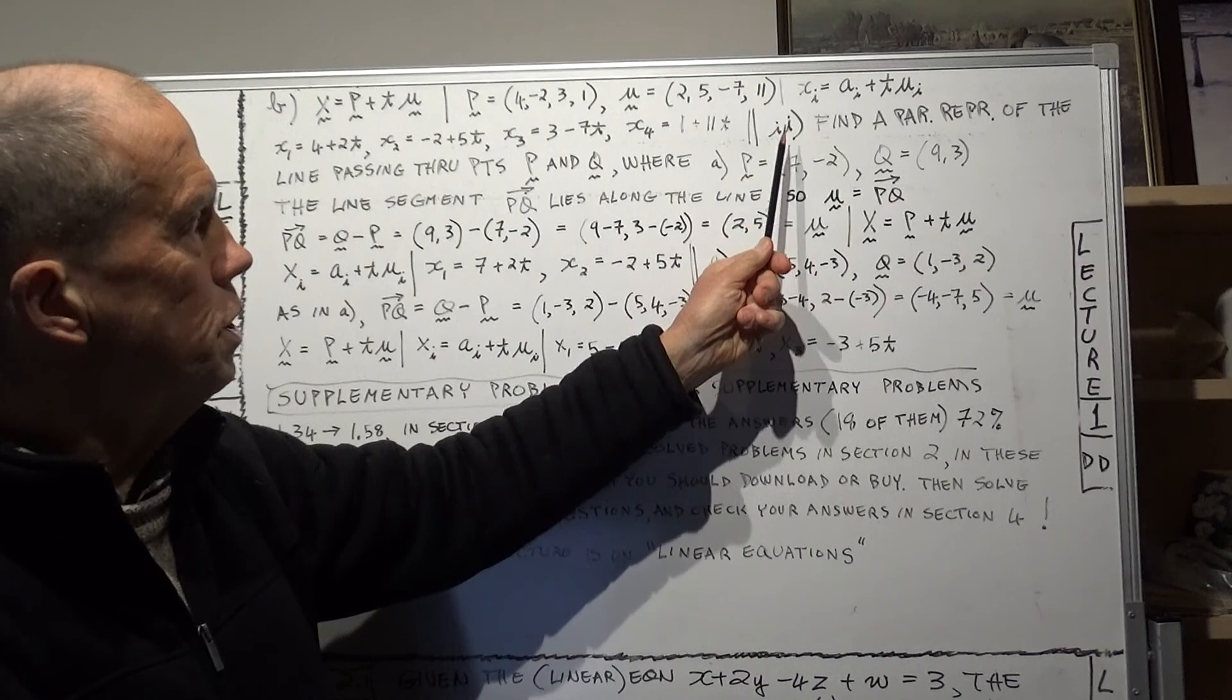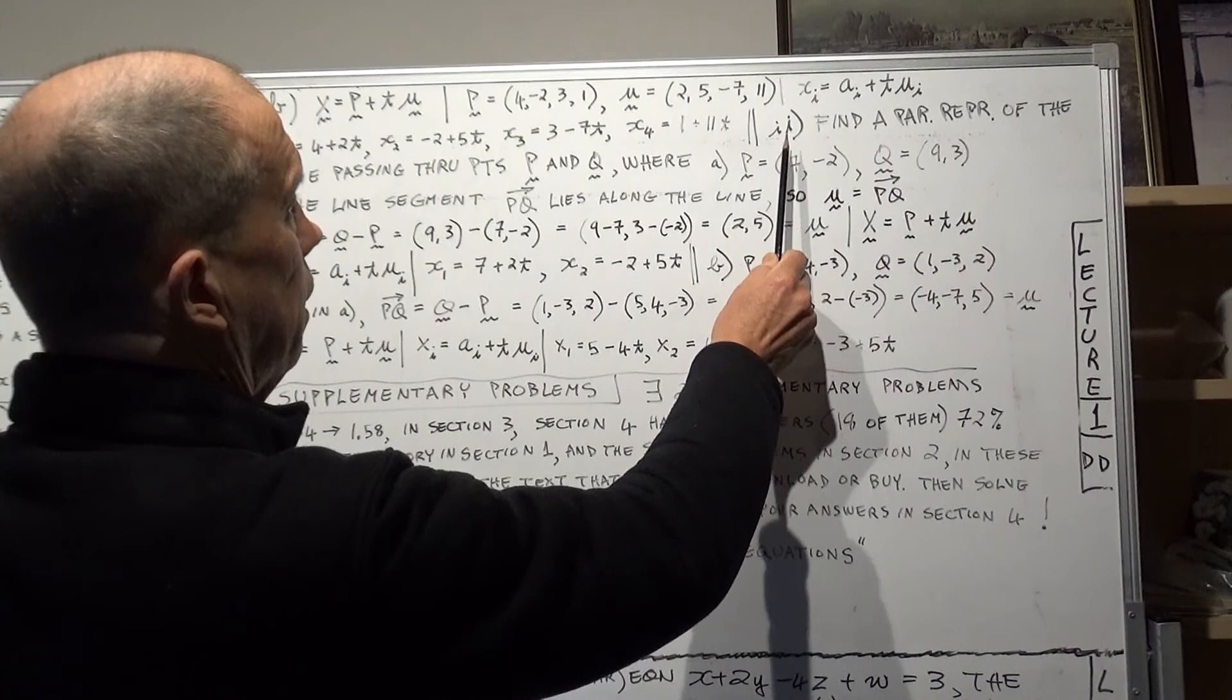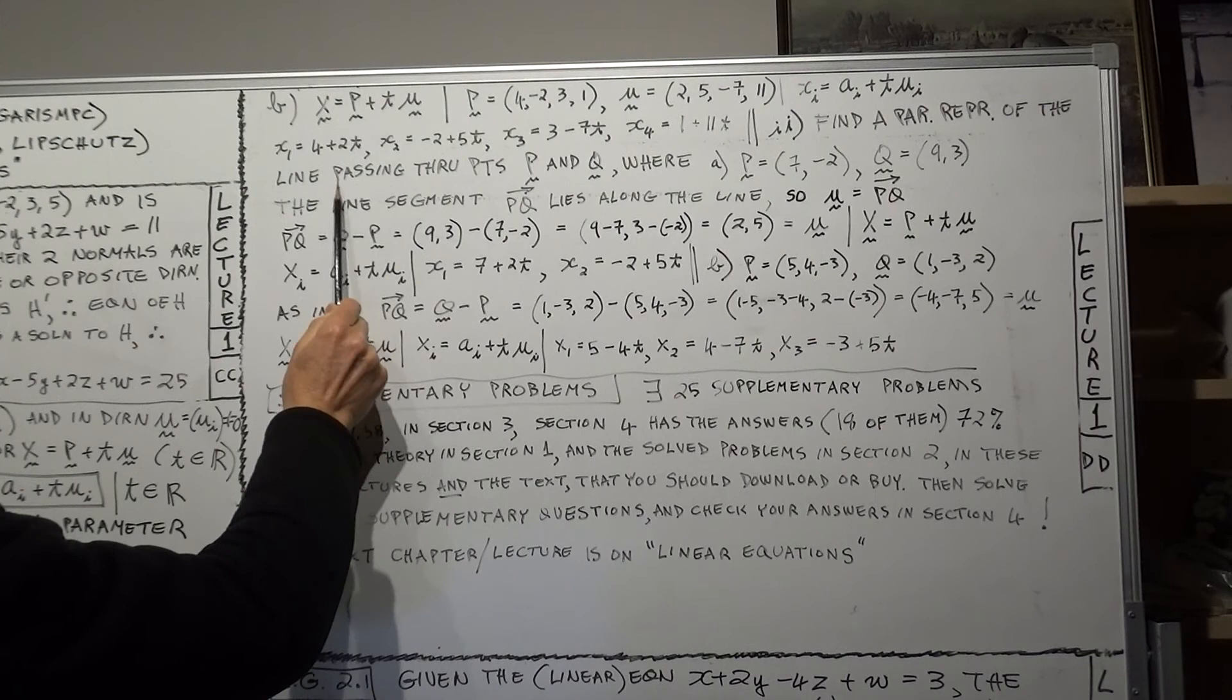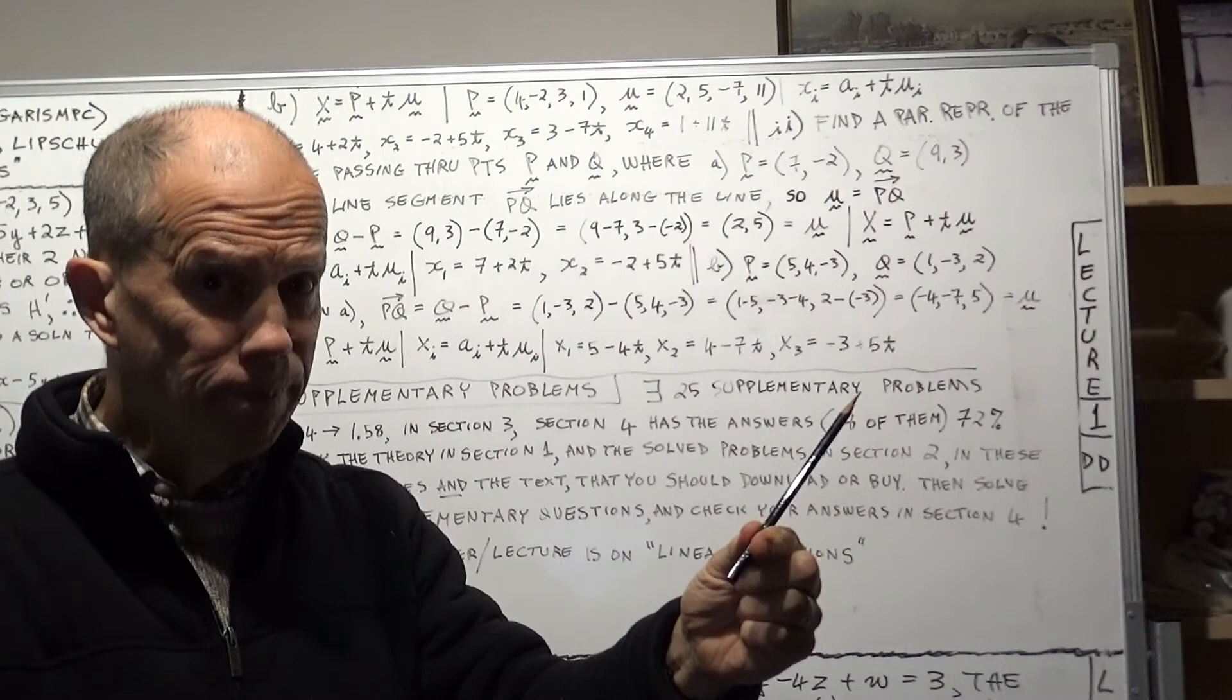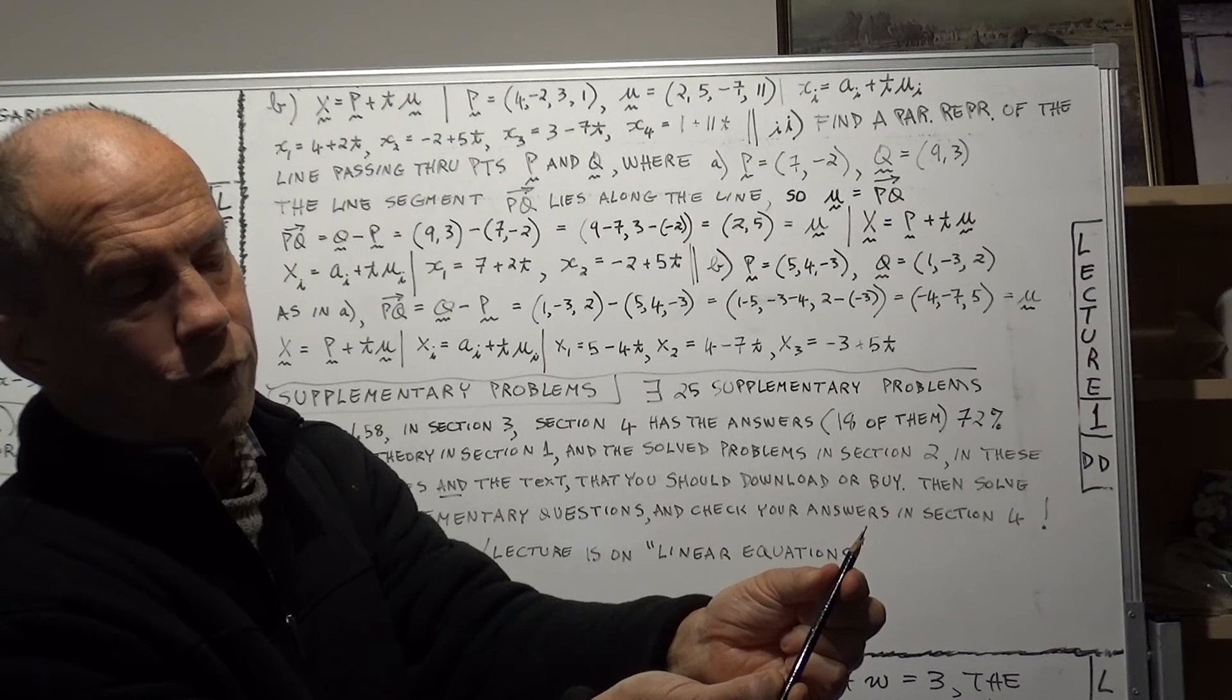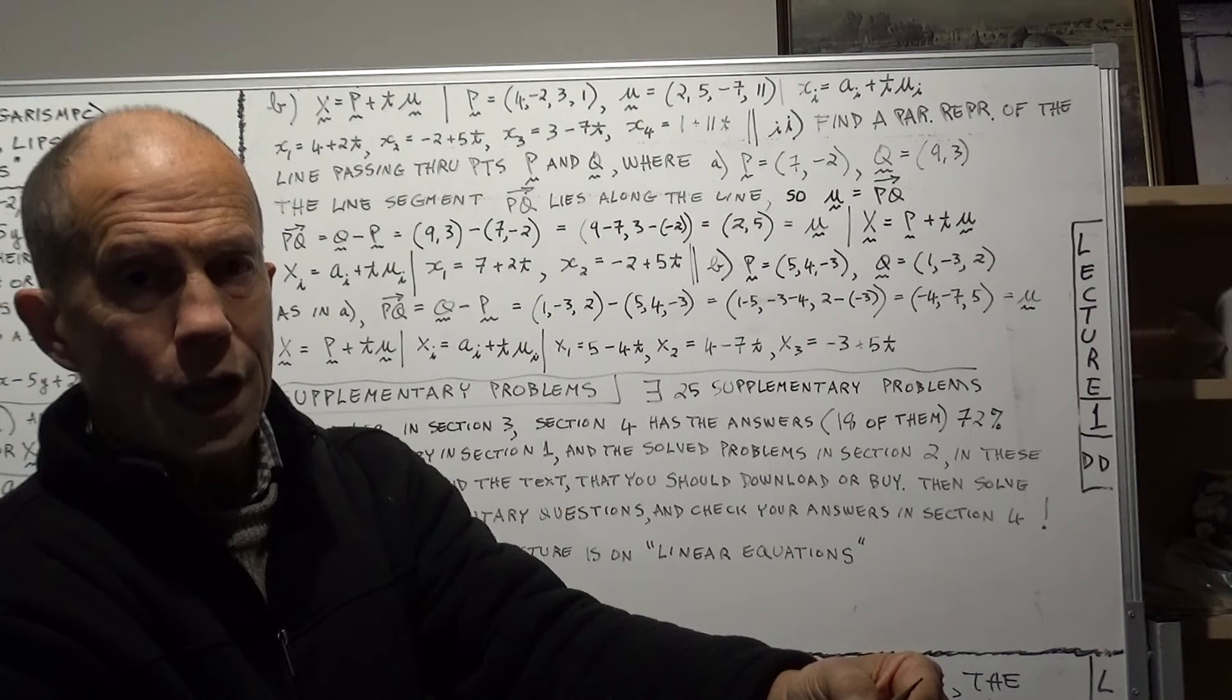Now the second part of the question, question number 1.33. Part two, you're asked to find a parametric representation of a line which passes through two points. Now just common sense, if this is a line in n dimensional space, and you're given two points - where my fingers grip the line, so that's point one and that's point two - if you're given those two points, that fixes the line, right? So two points, common sense, fixes the line.